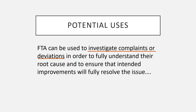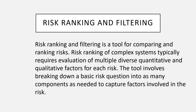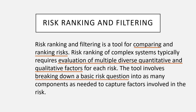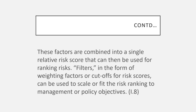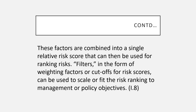Risk ranking and filtering is a tool for comparing and ranking risks. Risk ranking of complex systems typically requires evaluation of multiple diverse quantitative and qualitative factors for each risk. The tool involves breaking down a basic risk question into as many components as needed to capture all factors involved. These factors are then combined into a single relative risk score that can be used for ranking risks.